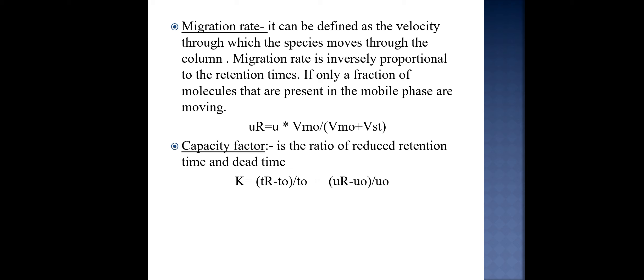Next is migration rate. It can be defined as the velocity through which species move through the column. Migration rate is inversely proportional to the retention time. And it is denoted by UR is equal to U or UR is equal to U into VMO upon VMO plus VST. Here, VMO is mobile phase volume and VST is stationary phase volume. And next parameter is capacity factor. It is the ratio of reduced retention time and dead time. It is shown as K is equal to TR minus T0 upon T0 which equals UR minus U0 upon U0.